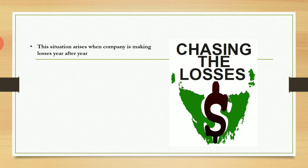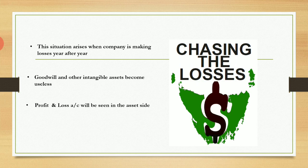This situation arises when the company is making losses year after year. A company making continuous losses will have no reputation in the market, so goodwill and other intangible assets become useless. The profit and loss account will be seen on the asset side, signifying losses. And when a company is incurring losses, whatever savings and reserves the company has will be utilized first.